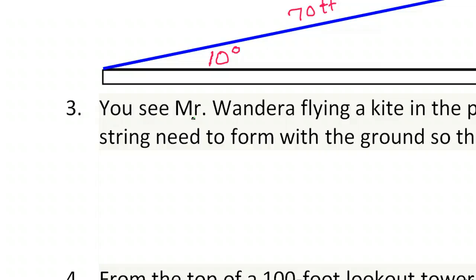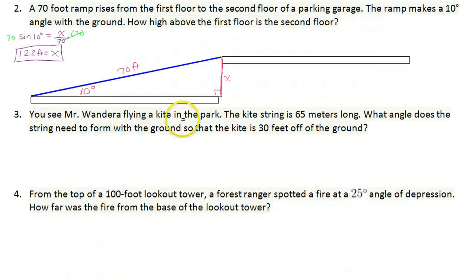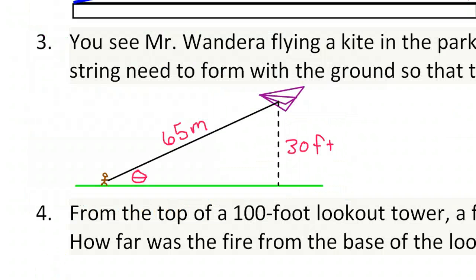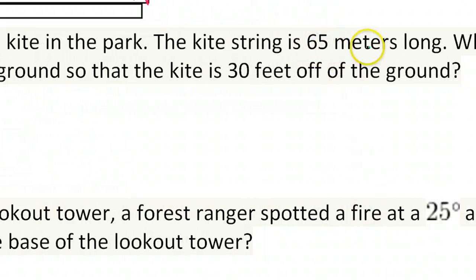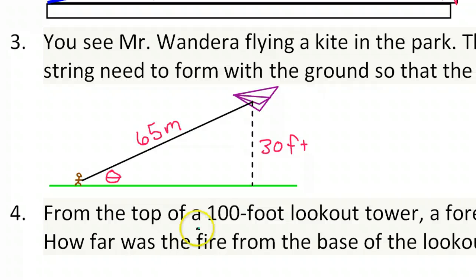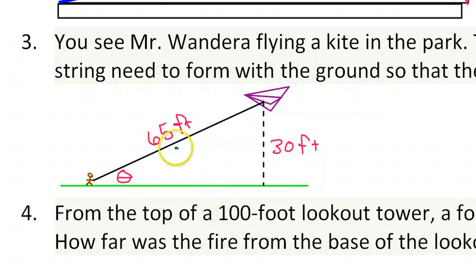How about number 3? You see Mr. Wanderer flying a kite in the park. The kite string is 65 meters long. What angle does the string need to form with the ground so that the kite is 30 feet off the ground? So 65 meters long is the kite string. 30 feet off the ground is the kite. Meters and feet. I have a feeling that that's a mistake, and I don't think we're supposed to be converting between feet and meters right now. Let's just go with feet. Hopefully you won't run into that because usually we're consistent with the units. So let's just call it feet and go from there.